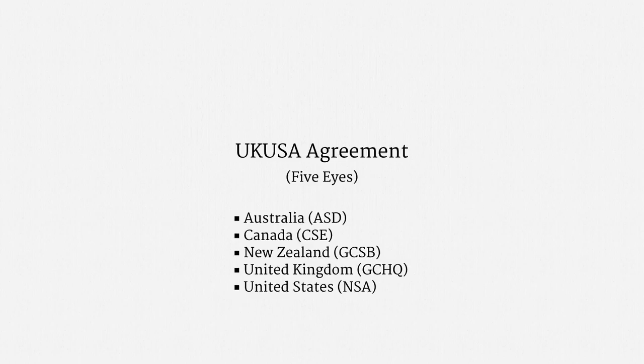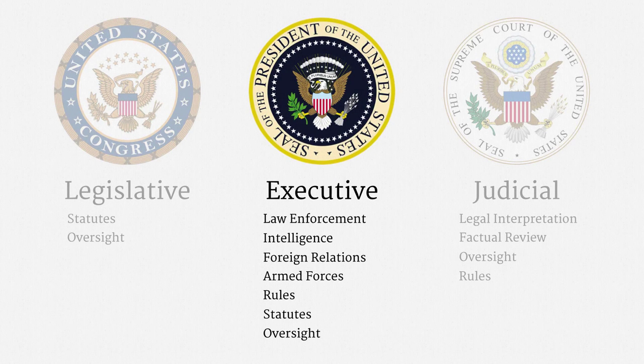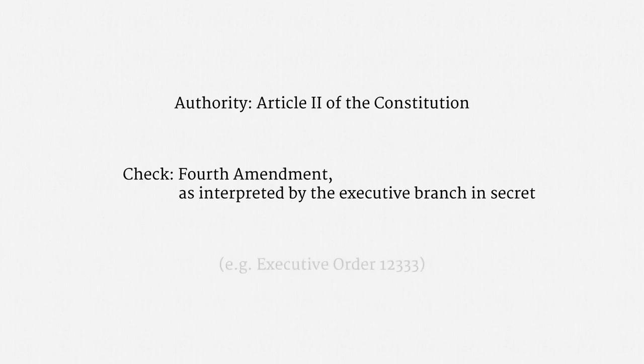In the mid-20th century, the executive branch was largely unchecked by the other branches on foreign intelligence matters. That isn't to say the executive branch thought it had unlimited authority — historical records reflect that some surveillance policies were narrowed out of constitutional concerns. Historically, the authority for foreign intelligence was rooted in the President's inherent Article II powers, and the key legal check on that authority was the Fourth Amendment, as interpreted by the executive branch, in secret. That paradigm, for the most part, has actually not changed. Executive Order 12333, which is the leading basis for American signals intelligence, reflects this very same view of the law.